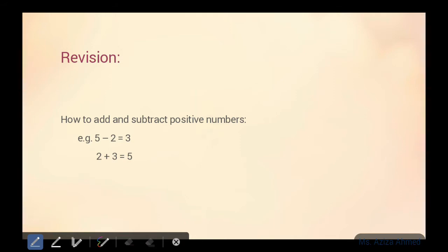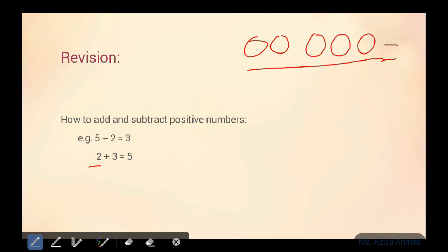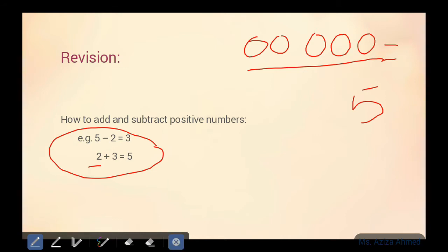Now let's see what happens when we add a positive number. When we add a positive number, we get more. For example, here are 2 circles. When we add 3 more circles, it becomes 5. So the answer is 5. We can say that when we add a positive number, we get more. Therefore, when we add a negative number, we must get less.